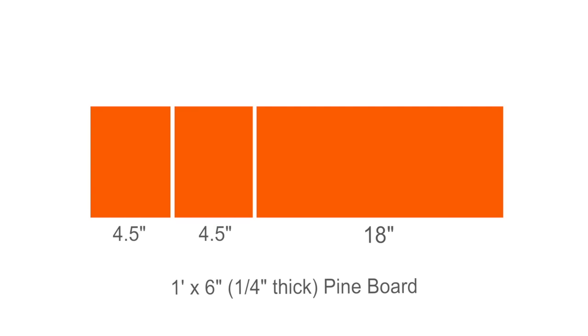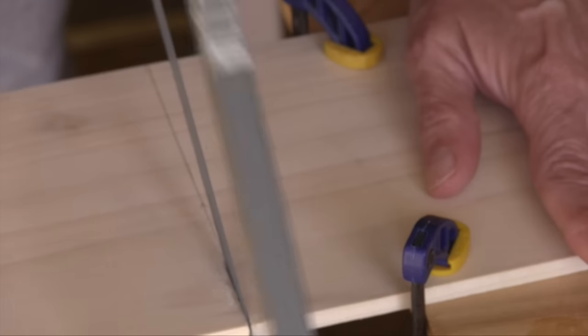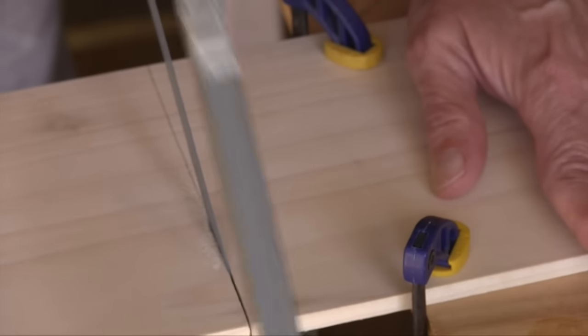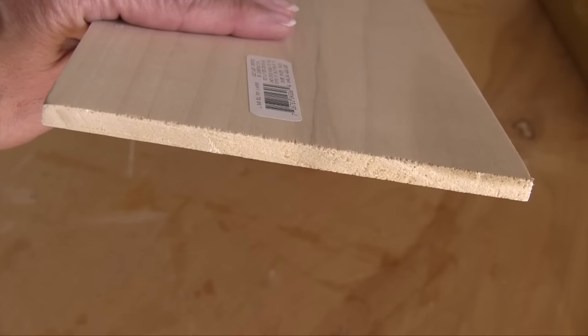To make it, I first cut a 1 by 6 pine board that's a quarter of an inch thick into three pieces—one for the front and two for the sides. I used a hacksaw instead of a regular saw to make a nicer finer cut. I also covered the ends of the boards with iron-on wood edging to give a smoother finish.